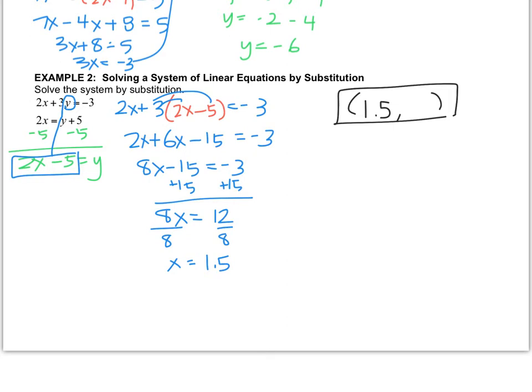Now you take 1.5, you plug it into whichever equation looks easier, and solve for the other piece. I think the second equation looks easier because this first one has a lot of coefficients. So I'm going to rewrite the second equation to say 2 times 1.5 equals y plus 5. So that gives me 3 equals y plus 5. So then y is equal to negative 2. So these two equations intersect at the point 1.5 comma negative 2.